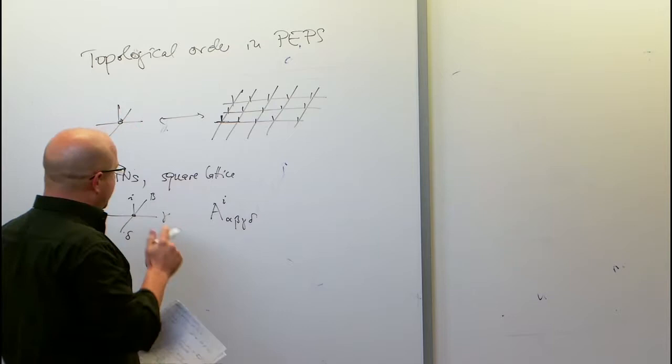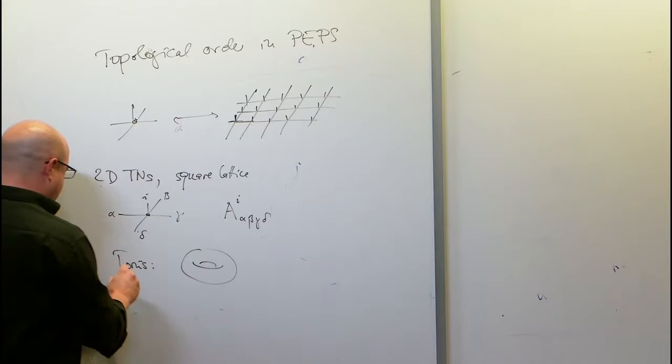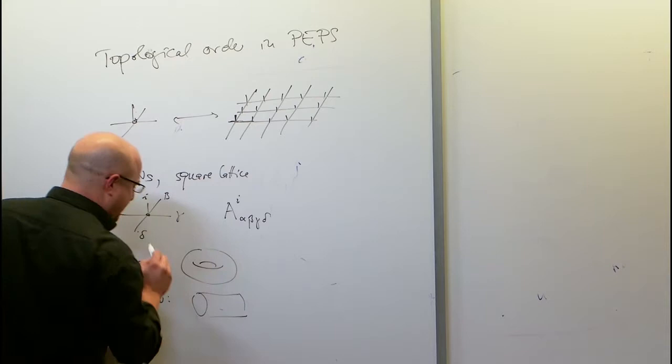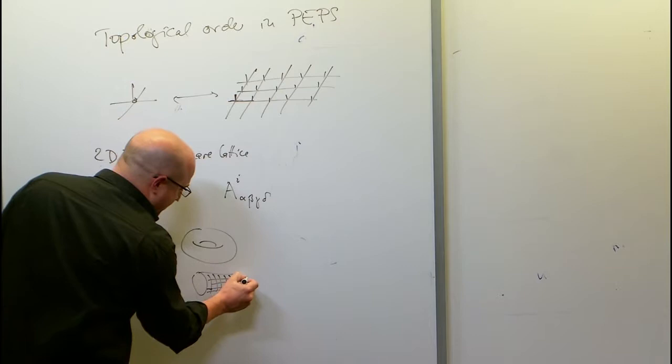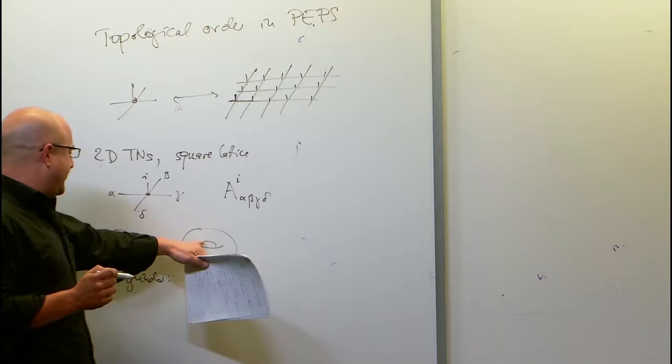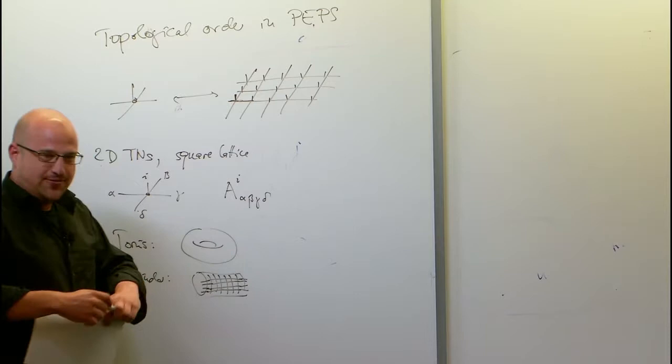These tensor networks can be put on various geometries. I will consider either a torus or a cylinder. On the cylinder, I typically consider the case where there are open links at the boundary — meaning I took a tensor network on a torus, chopped it into two pieces, and there are links sticking out telling me how to entangle this cylinder with the other half of the torus.